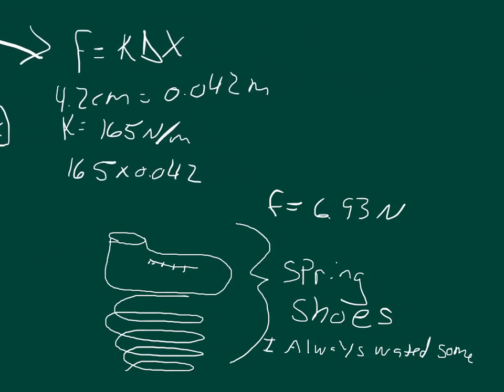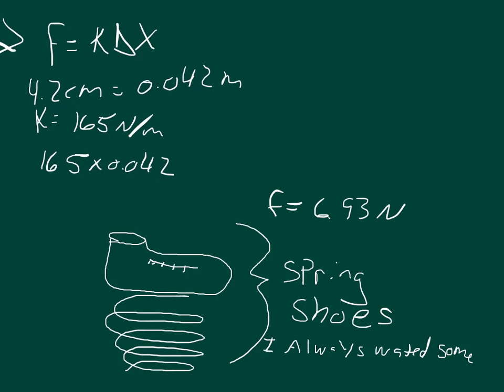And then in part B, we'll move this out of the way. In part B we find that the force constant stays the same, so it stays 165 newtons per meter.